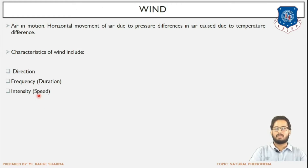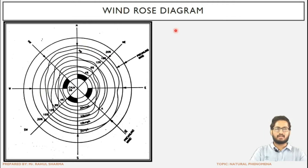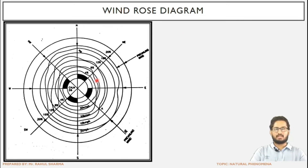Next is the wind rose diagram. There is only a brief coverage of this topic here, but in the airport portion — that is in the runway design chapter of airport engineering — we will be studying the wind rose diagram in detail along with its two types. Here we will study only in short what a wind rose diagram is.